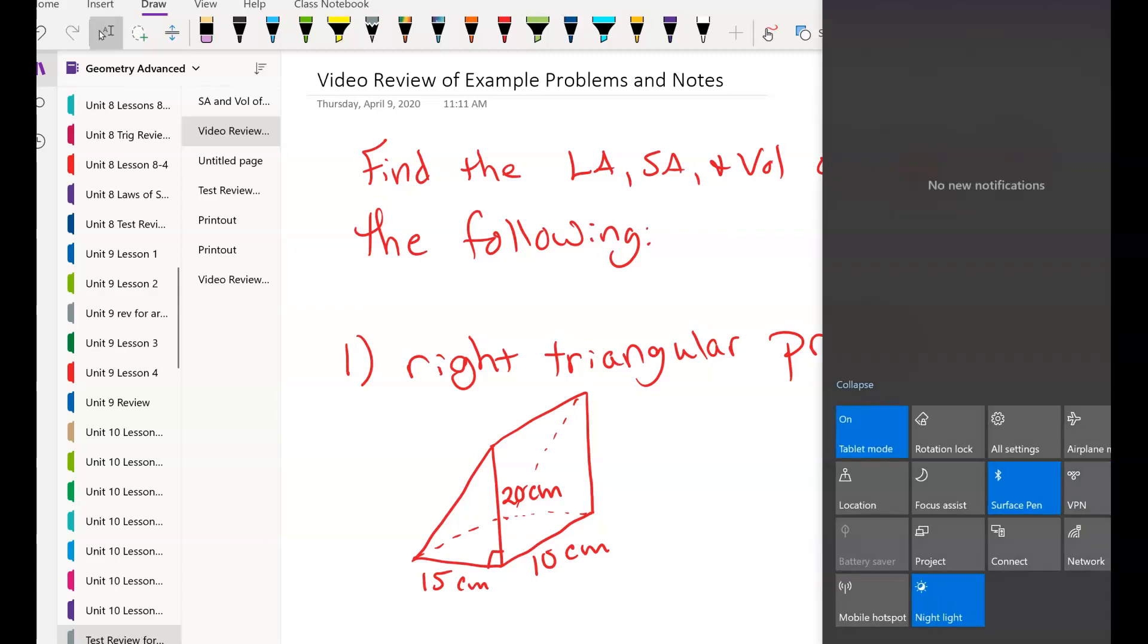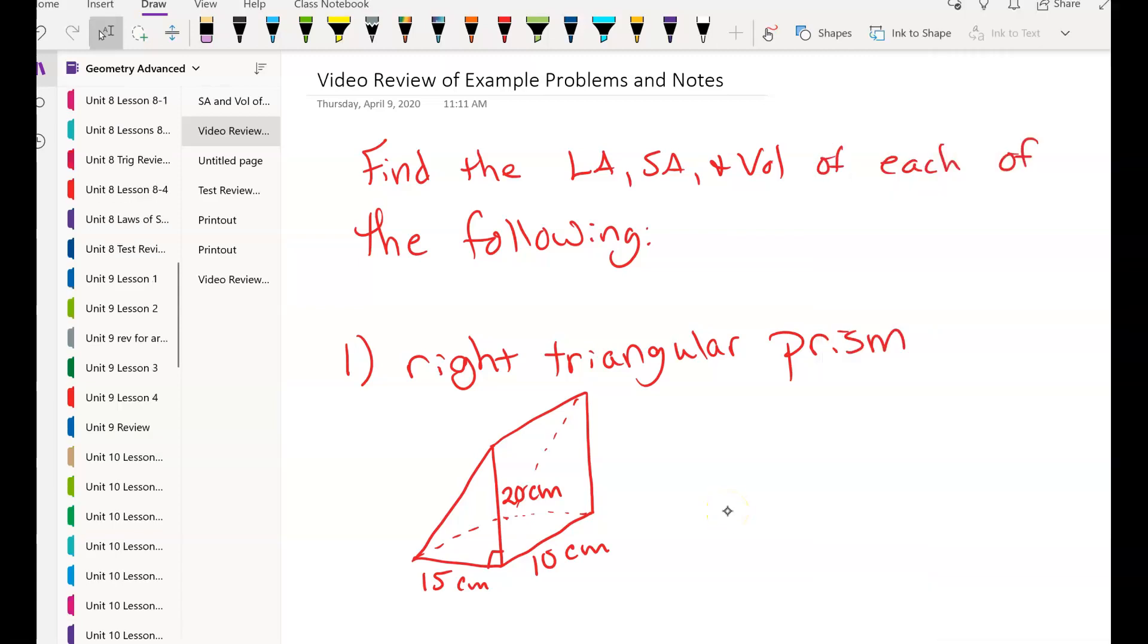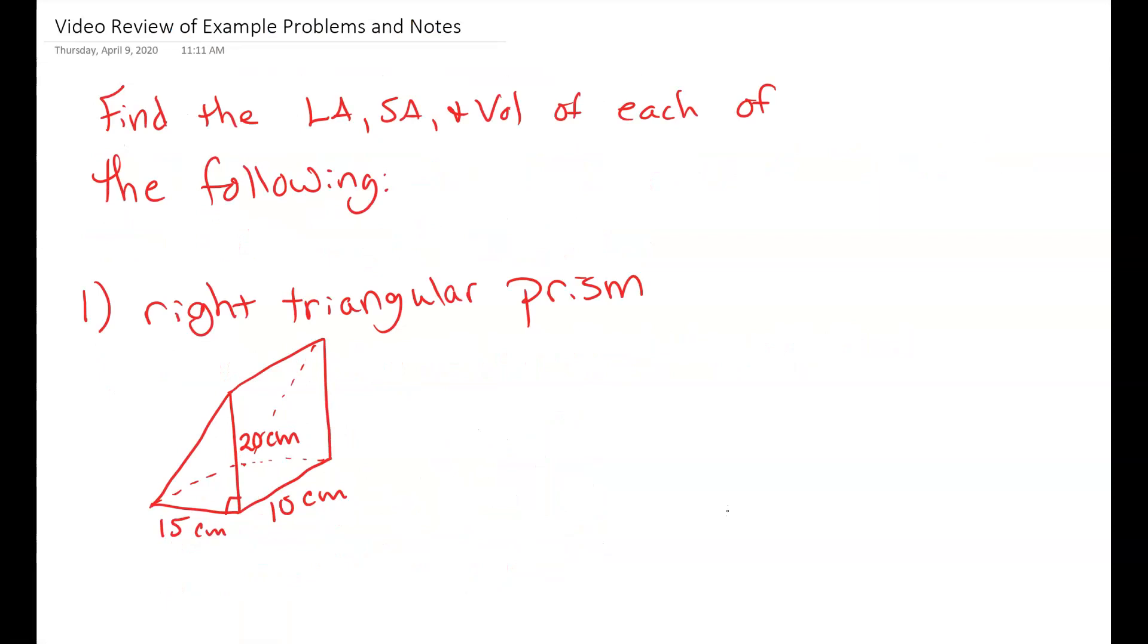Let me put this in tablet mode, and then I'm going to expand the page so we can keep recording. Okay, so here's going to be the basic gist of the test. You are going to be given at least five to six different shapes, and you are going to have to find the lateral area, surface area, and volume of all of these shapes.